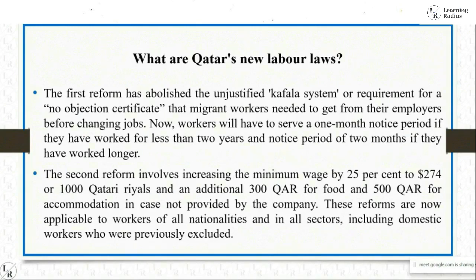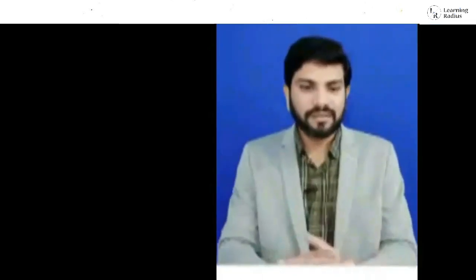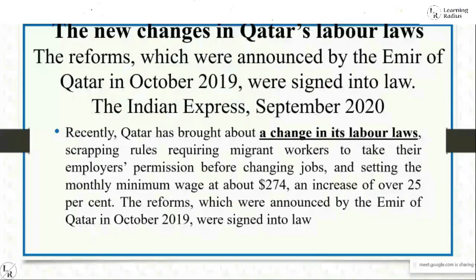Workers will have to serve a one-month notice period if they have worked for less than two years, and a two-month notice period if they have worked longer. The second reform involves increasing the minimum wage by 25 percent to $274, or 1,000 Qatari riyals, with an additional 300 Qatari riyals for food and 500 Qatari riyals for accommodation if not provided by the company. These reforms are applicable to workers of all nationalities and in all sectors, including domestic workers who were previously excluded.